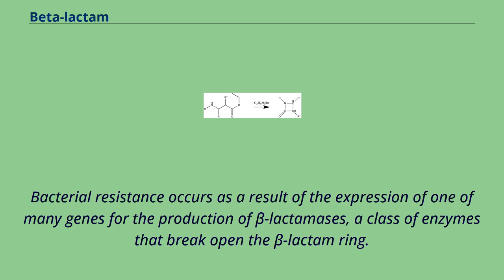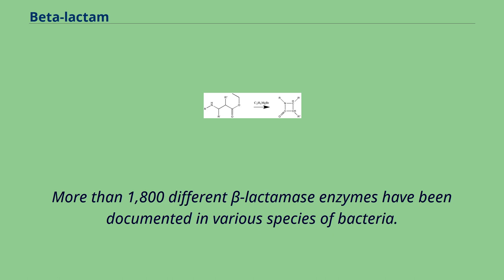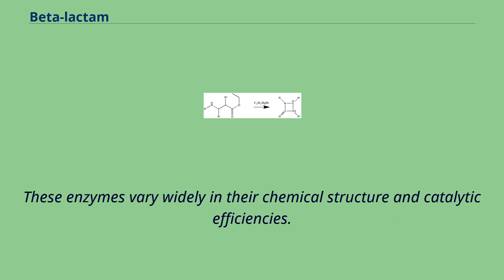Bacterial resistance occurs as a result of the expression of one of many genes for the production of beta-lactamases, a class of enzymes that break open the beta-lactam ring. More than 1,800 different beta-lactamase enzymes have been documented in various species of bacteria. These enzymes vary widely in their chemical structure and catalytic efficiencies.